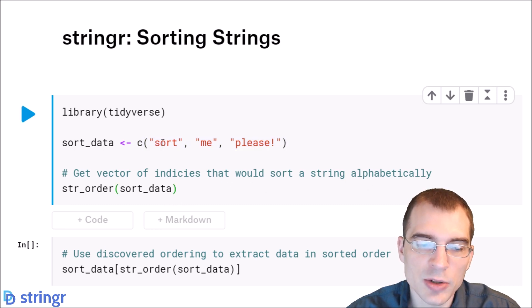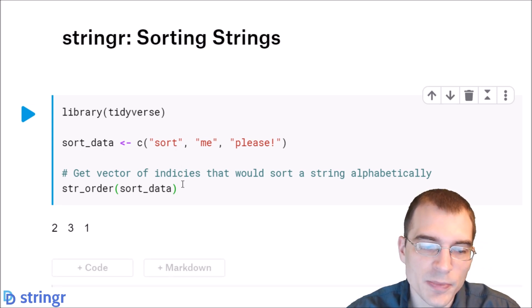So when we run that, it'll show us the indices that would order it in the proper order for it to be sorted. So it's saying that index 2 would be the first one in alphabetical order, which it is. Index 3 is the second one, and index 1 is the last in alphabetical order.